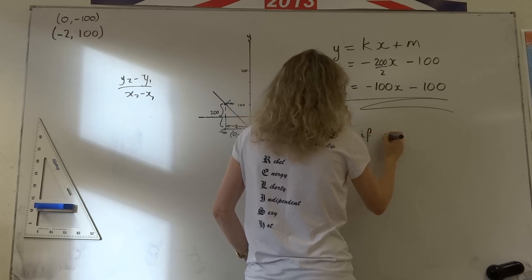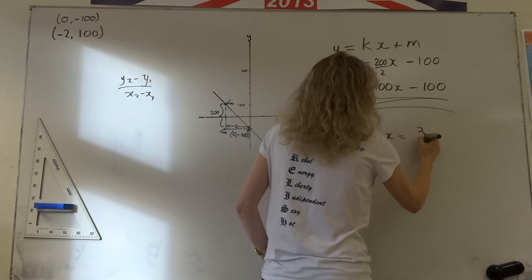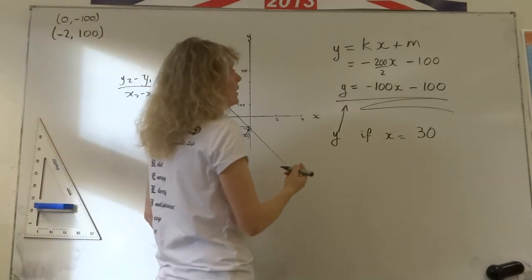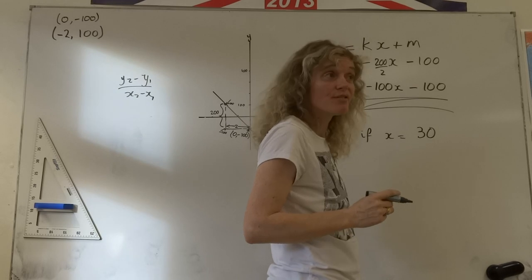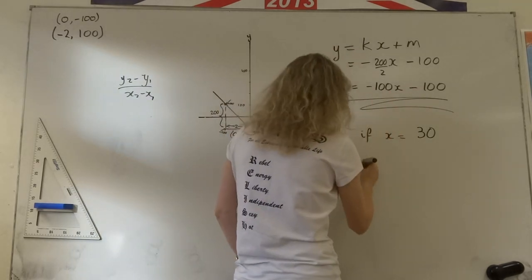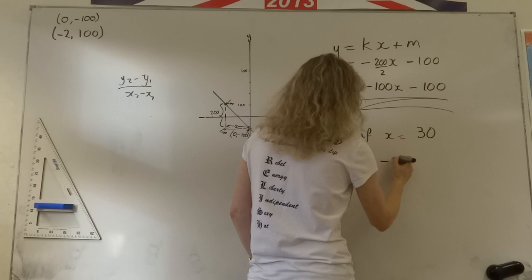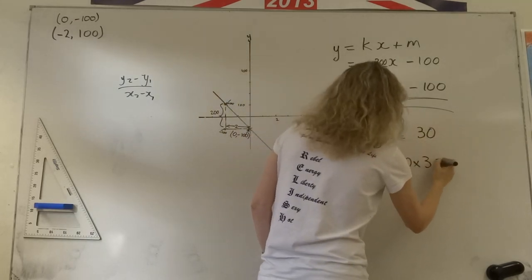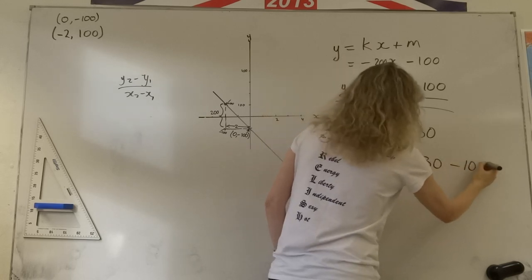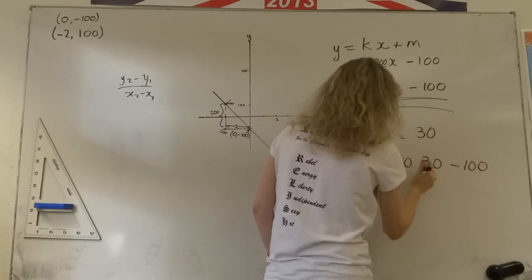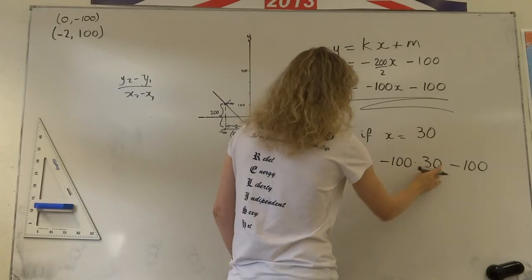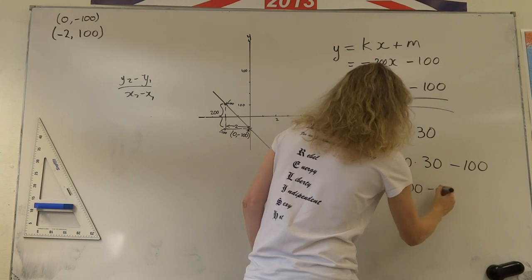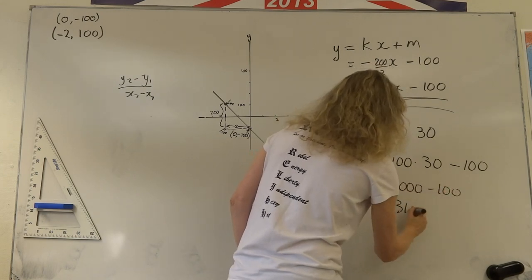So if I now said what is the value of y if x equals 30, and you want to know what value of y you're going to get? Looks like this person has a debt of some sort because it's a negative number. Well, the debt that that person would have would be minus 100 times, we put in the value for x here, 30 minus 100.